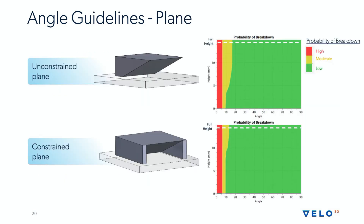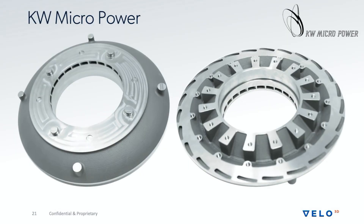Take a look at our probability of breakdown chart for an angled plane. On the x-axis we show the angle of overhang of the plane, and the y-axis is the height of the feature. When both features start, the probability of breakdown is pretty equal, but as the part grows upward the probability of breakdown increases. The unconstrained plane is able to lift upward and succumb to the internal stresses and warps of the part, while the constrained plane can survive much longer before a process breakdown is likely. This concept of constrained planes was utilized in a really cool part from KW Micropower — a titanium part, rather large, printed support-free on the inside with lower overhangs below eight degrees printed without support and without process breakdowns.